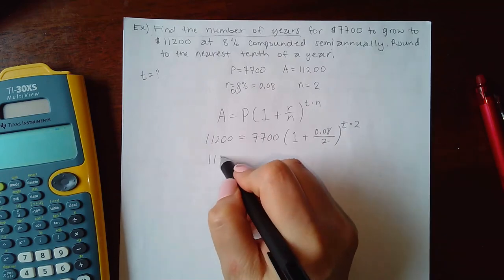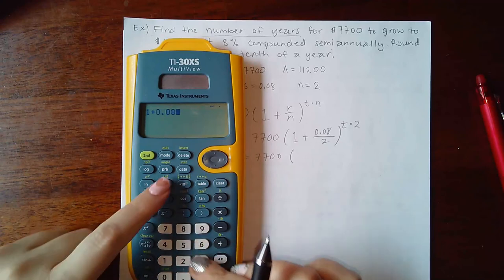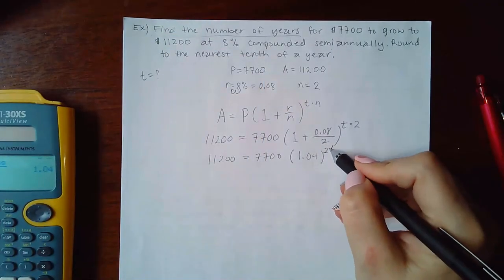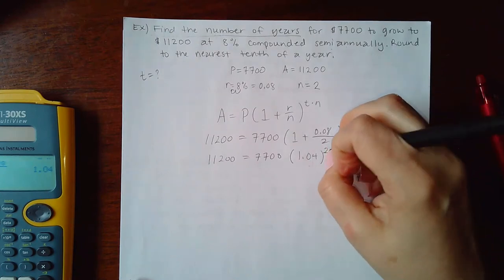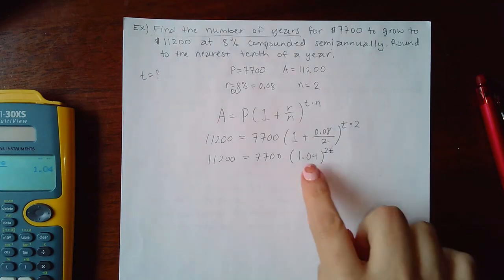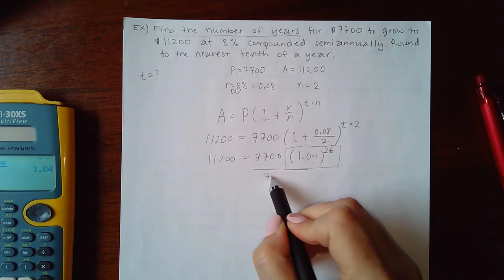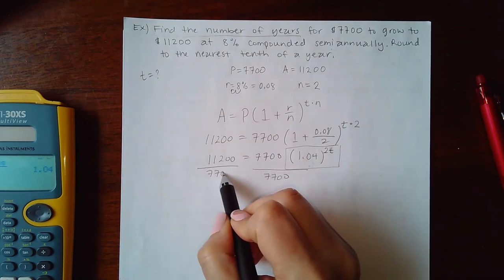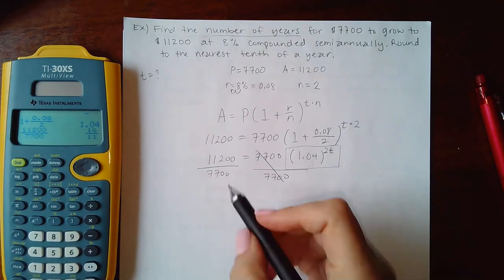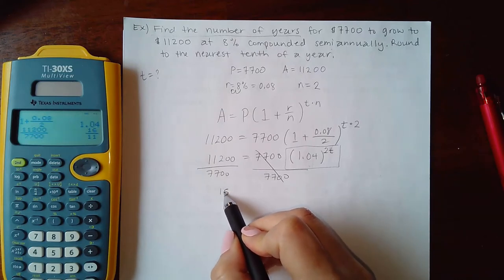Simplifying inside the parentheses: 1 plus 0.08 over 2 gives 1.04, so I have 1.04 to the 2t power. Now I have an exponential equation. To solve it, I need the exponential part alone first, so I divide both sides by 7700. To avoid decimals until the end, that fraction reduces to 16 over 11.